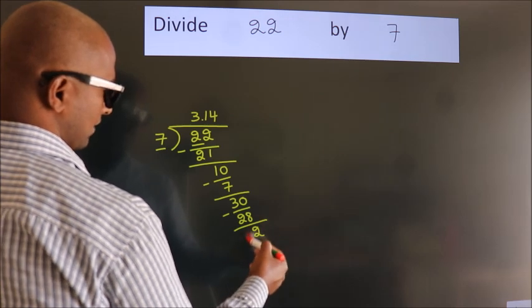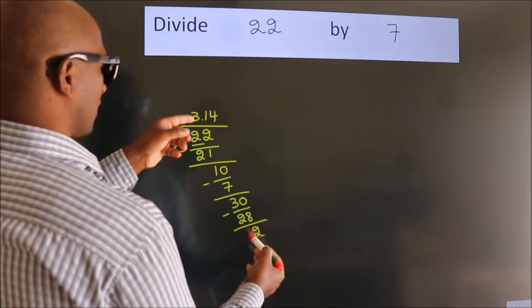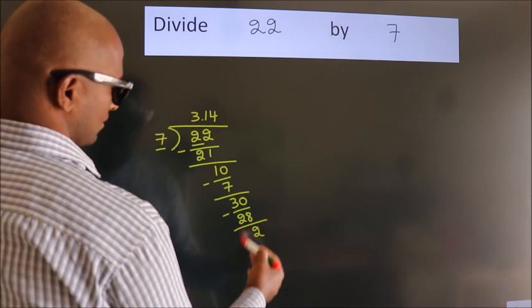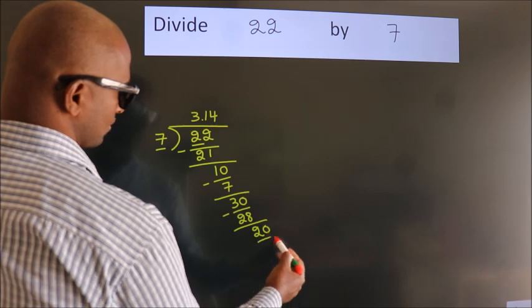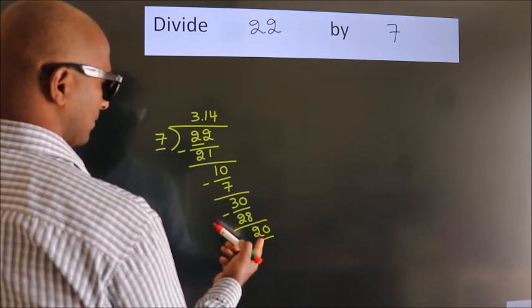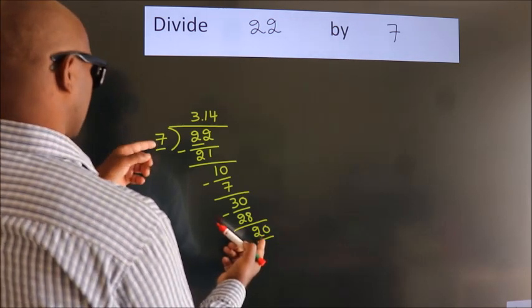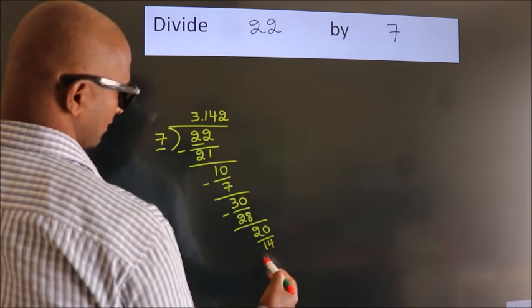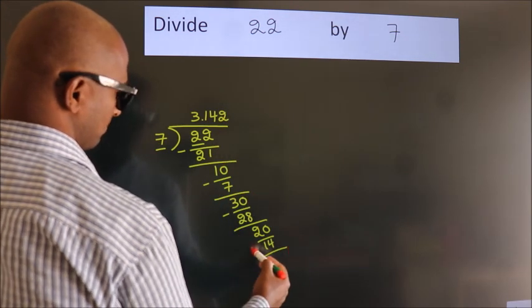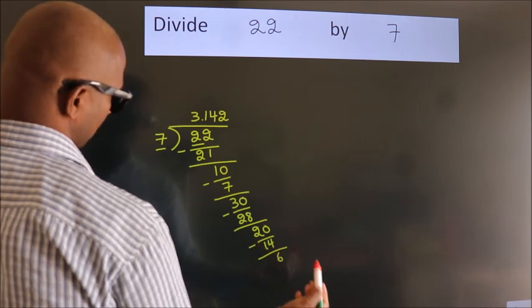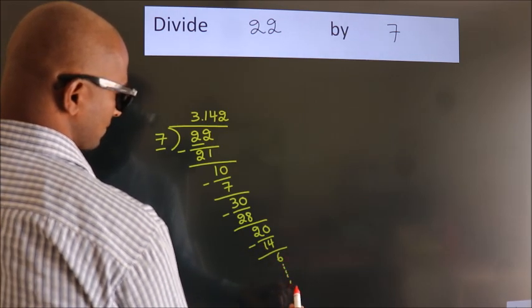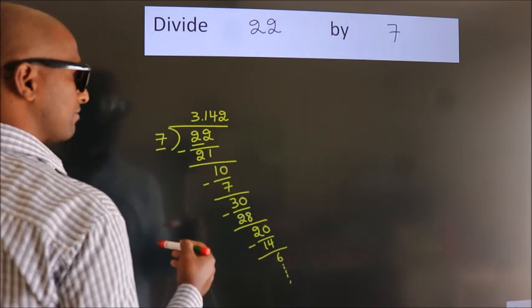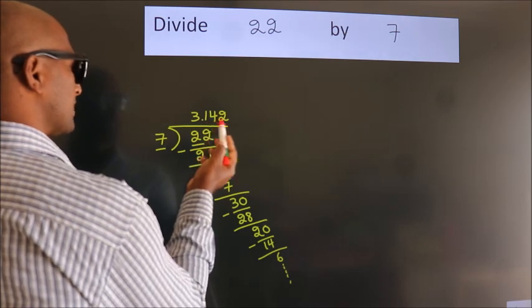2. After this, we already have the decimal, so directly take zero. So 20. A number close to 20 in the seven table is seven twos, 14. Now we subtract and get 6, and the division continues. It is enough if we do up to three decimal places.